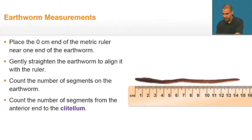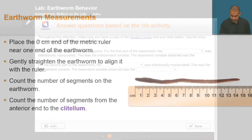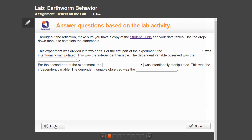The on-screen teacher demonstrates using a ruler to measure the earthworm. Students are also directed to count the number of segments on the earthworm — though the picture is a little small, the teacher shows how to identify them. In the follow-up assignment, students reflect on the laboratory experiment, and they should have a copy of the student guide and their data tables throughout.